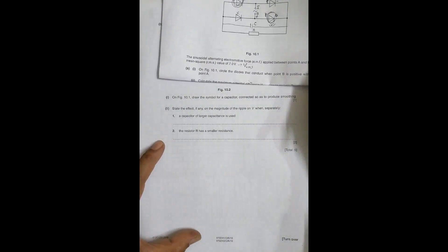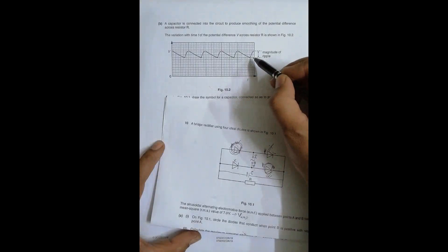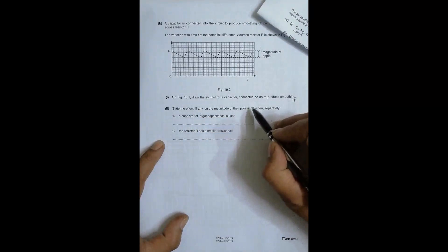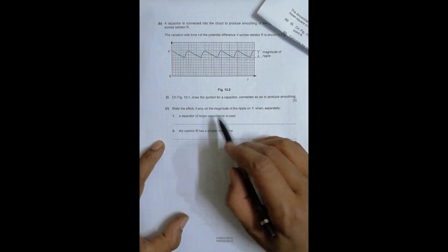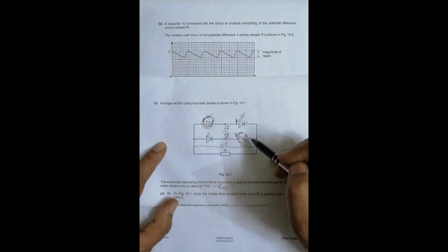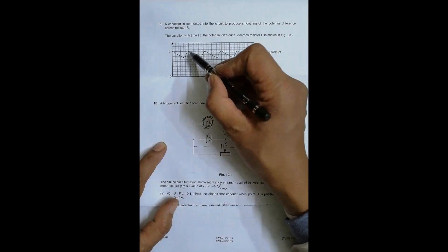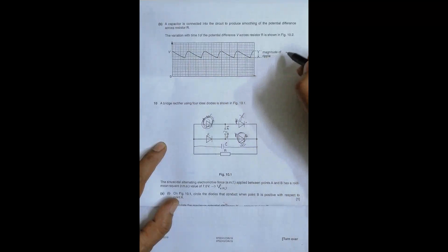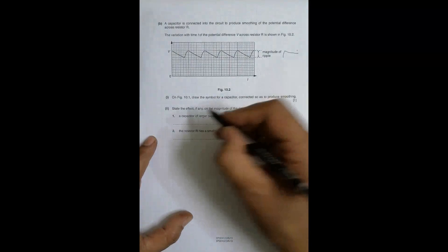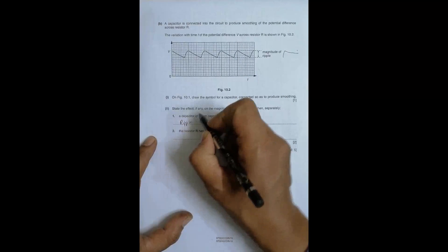Now state the effect if any on the magnitude of the ripple. So ripple is the difference between max and minimum voltage. So we have to state the effect if any on the magnitude of the ripple when separately a capacitor of larger capacitance is used. So if I use a larger capacitance here, at the same PD it will be depositing more charge across its plates. So it can deliver charge for a long time. It means that it will decay very slowly. So if it happens like this instead of this, if it does like this, then the ripple should decrease. So in the first case, ripple decreases.